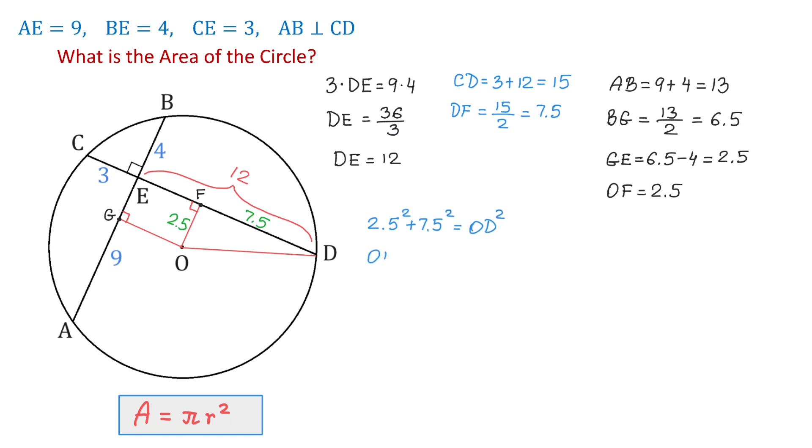Then OD equals square root of 2.5 squared plus 7.5 squared. Then OD is approximately 7.9 units. And OD represents the radius.